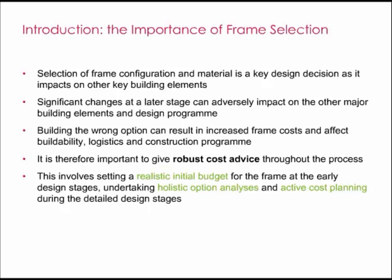So why is this so important to design and procurement of a new building? The selection of frame configuration and material is a key design decision as it impacts on other key building elements, such as the foundations, quantum of cladding, finishes, services routes, as well as impacting on the height of the building, planning grid, and position of cores, risers, etc.